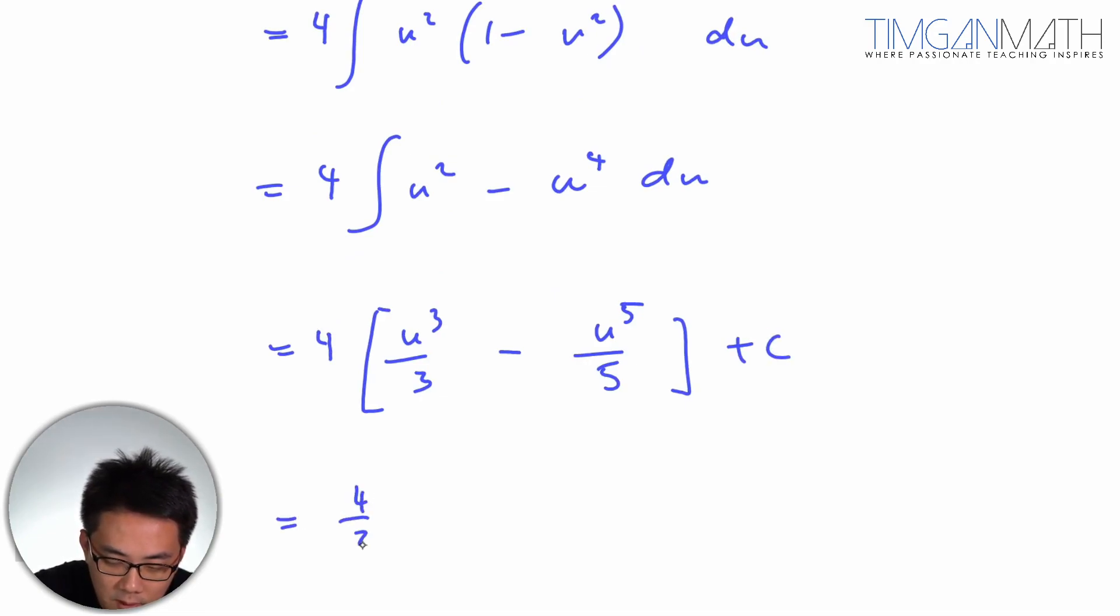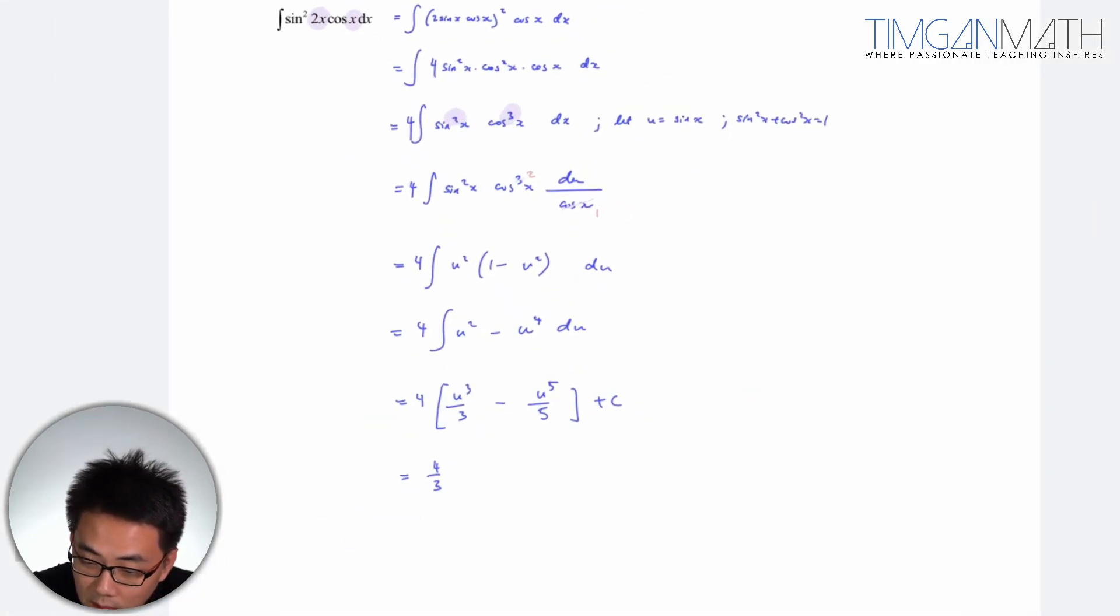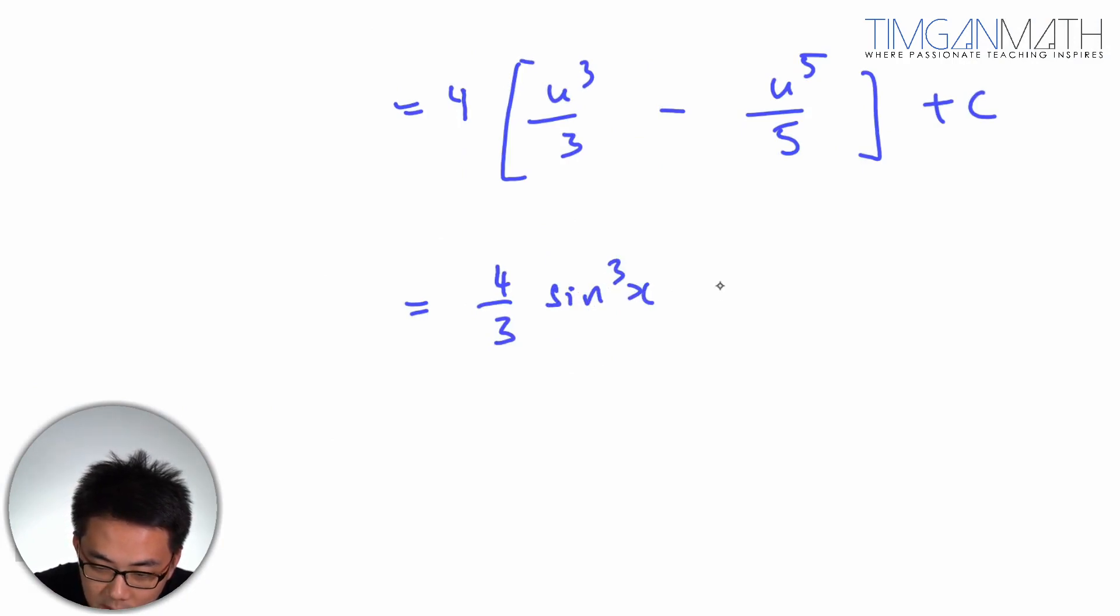So this is 4 over 3, u, substitute back in, which is sine x, sine cube x minus 4 over 5, sine to the 5 x plus c.